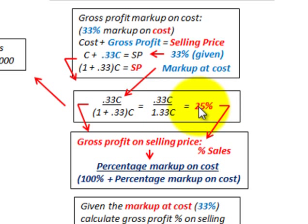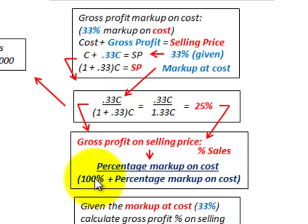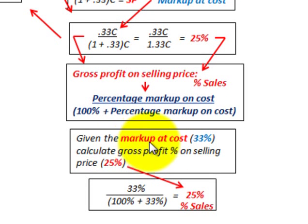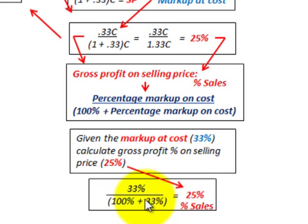So that equals 25%. The general formula for gross profit on selling price is: take the percentage of markup on cost — 33% in this case — and divide it by 100% plus the percentage of markup on cost. So 33% divided by (100% + 33%) gives us gross profit as a percentage of selling price of 25%.